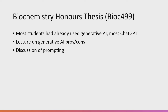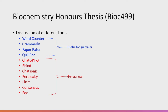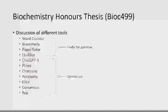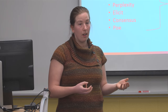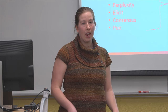We did a discussion on prompting, and I talked about a variety of freely available tools in Canada beyond just ChatGPT. For grammar and writing stats: Grammarly, WordCounter, PaperRater, and QuillBot — which provide information on active voice, word repetition, and common writing mistakes. For general generative AI: ChatGPT, Find, Chattasonic, Perplexity, Elicit, Consensus, and Poe. We went through each tool — what they're good for and what to be careful about.